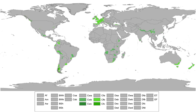Oceanic climates are defined as having a monthly mean temperature below 22 degrees Celsius in the warmest month, and above 0 degrees Celsius or minus 3 degrees Celsius in the coldest month. It typically lacks a dry season, as precipitation is more evenly dispersed throughout the year.